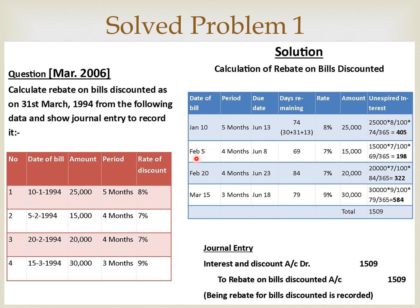For the second bill, February 5 is the issue date. Add four months: March, April, May, June — 5 plus three days grace period, so June 8 is the expiry date. Days remaining after March 31st: April (30 days), May (31 days), plus 8 days in June — 30 plus 31 plus 8 = 69 days. The unexpired interest for this bill is Rs. 198.